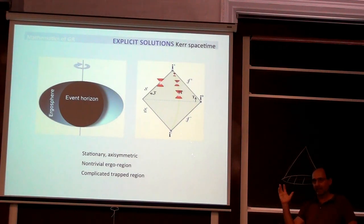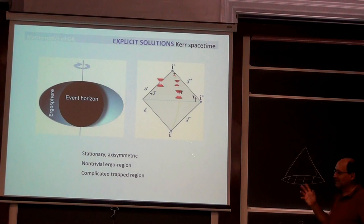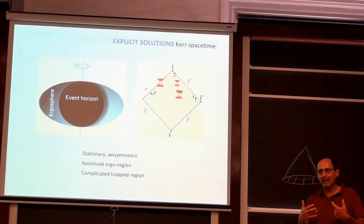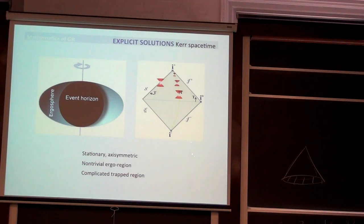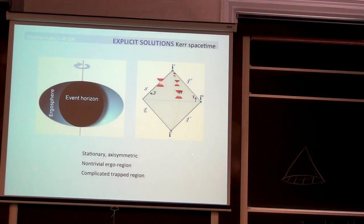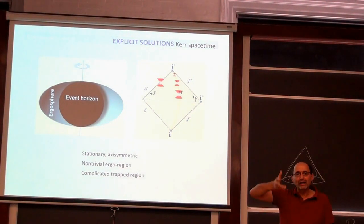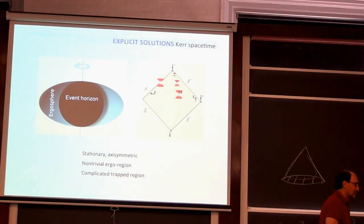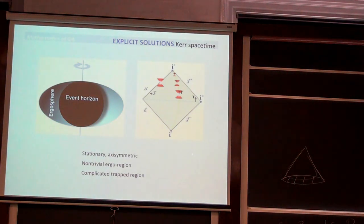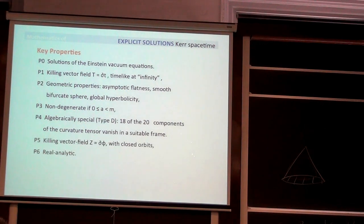The ergo region is where d/dt becomes spacelike. This creates lots of interesting physics, and mathematically makes estimates much more difficult. There are also trapped null geodesics, which in the Kerr case form a more complicated set than just r equals 3m as in Schwarzschild. These are key properties of the Kerr spacetimes: asymptotically flat, smooth bifurcate sphere, globally hyperbolic, and non-degenerate.